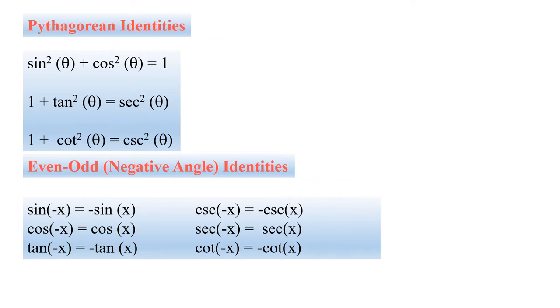We have 5 identities. The five identities are: sin squared theta plus cos squared theta is equal to 1; 1 plus tan squared theta is equal to sec squared theta; and 1 plus cot squared theta is equal to csc squared theta.